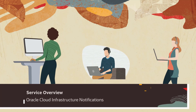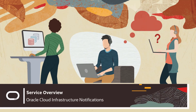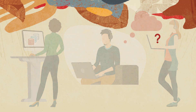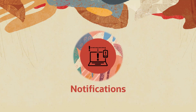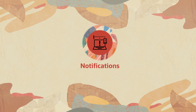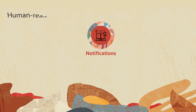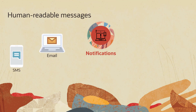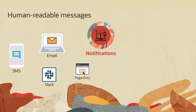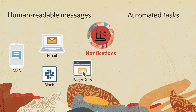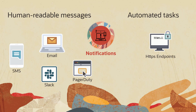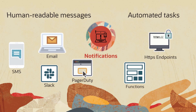Want to know right away when something happens with your resources in Oracle Cloud Infrastructure? Use OCI Notifications. Get human-readable messages through email, SMS, Slack, and PagerDuty. For automated tasks, get messages through custom HTTPS endpoints and OCI functions.